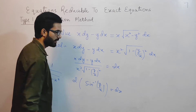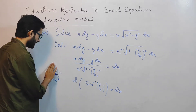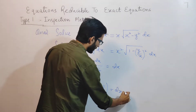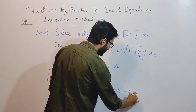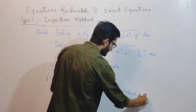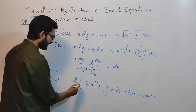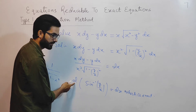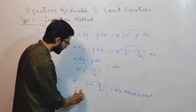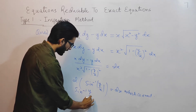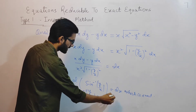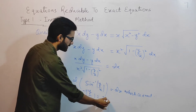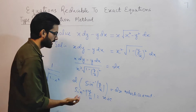That's why I wrote d(sin⁻¹(y/x)) = dx. This is clearly exact. So I will integrate both sides. The integration sign and differentiation sign cancel each other, leaving sin⁻¹(y/x) on the left, and x plus a constant c on the right.